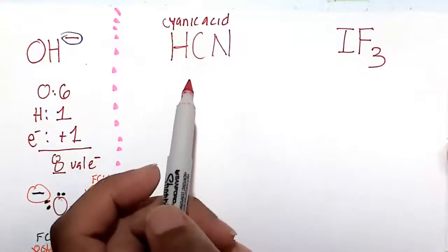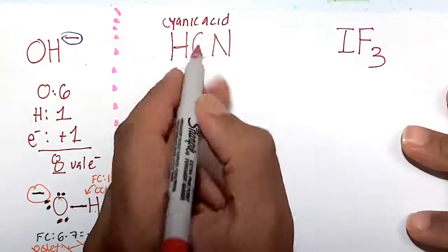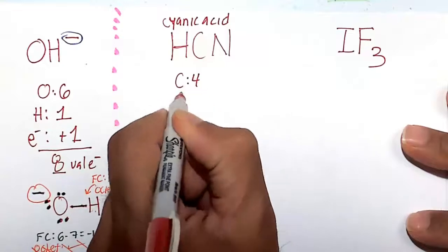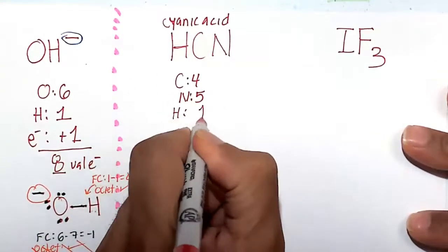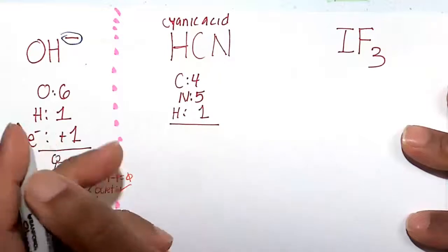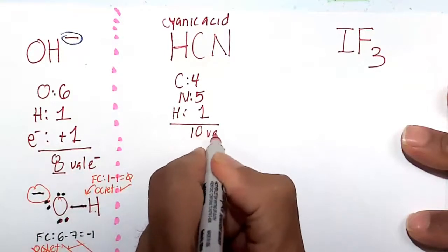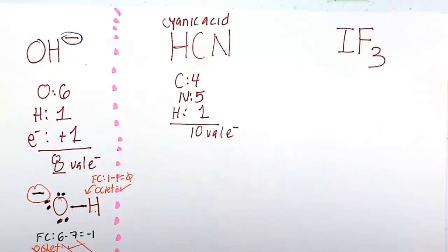Let's draw the Lewis structure of HCN, cyanic acid. So carbon is happy at 4, nitrogen is happy at 5, hydrogen is happy at 1. So 4 plus 5 is 9, 9 plus 1 is 10. So our goal here is to get 10 valence electrons around this molecule.